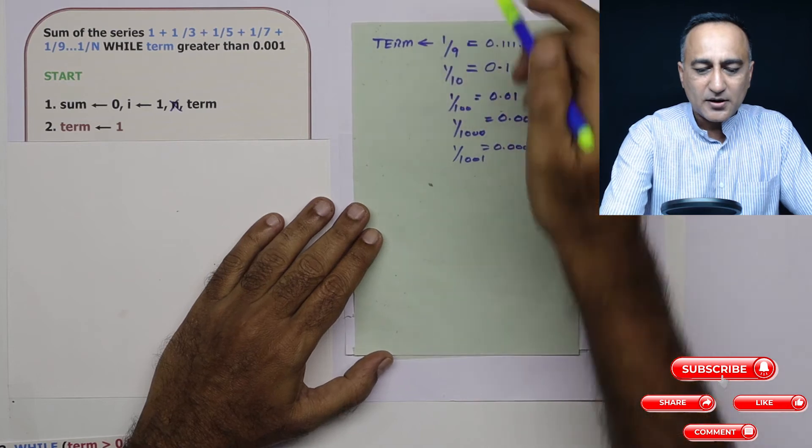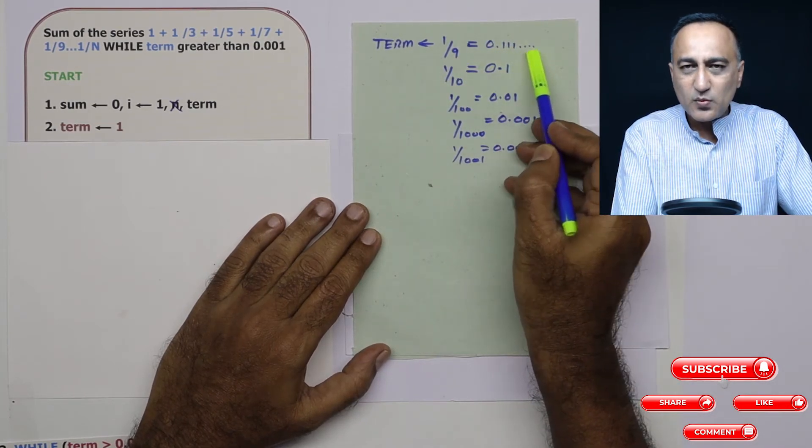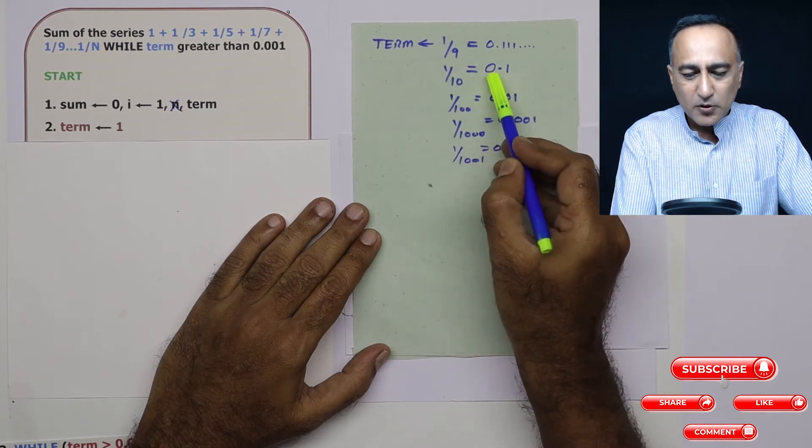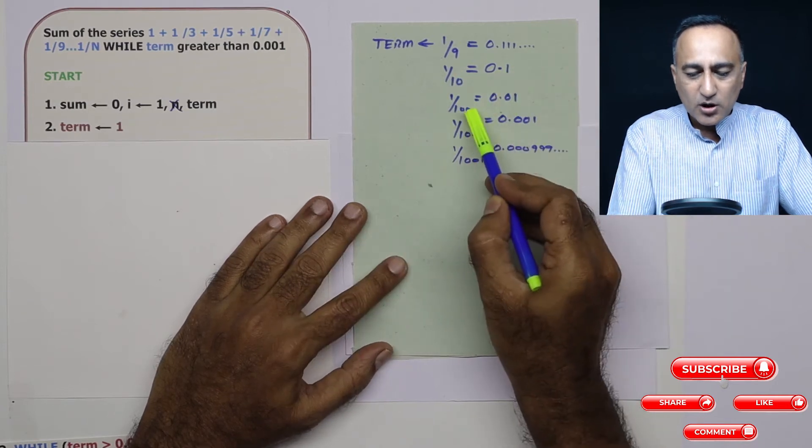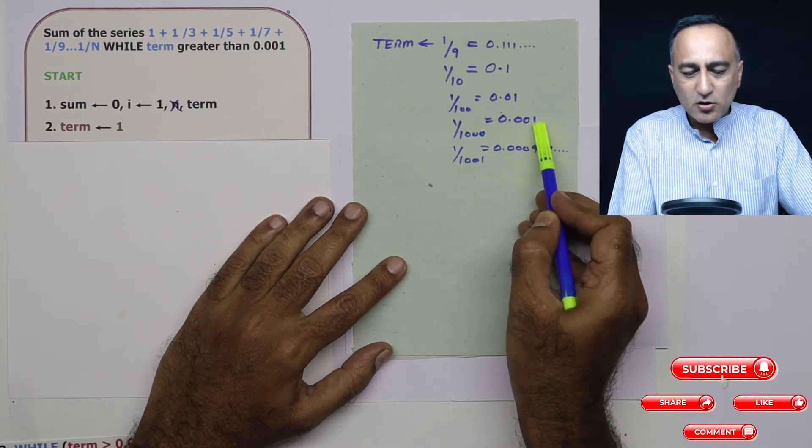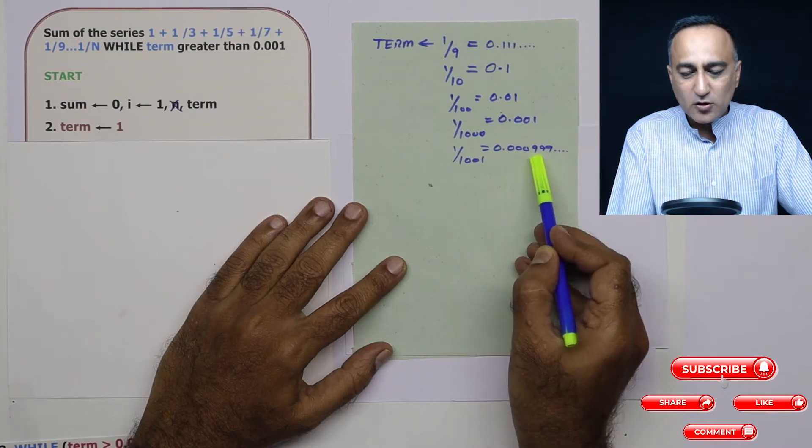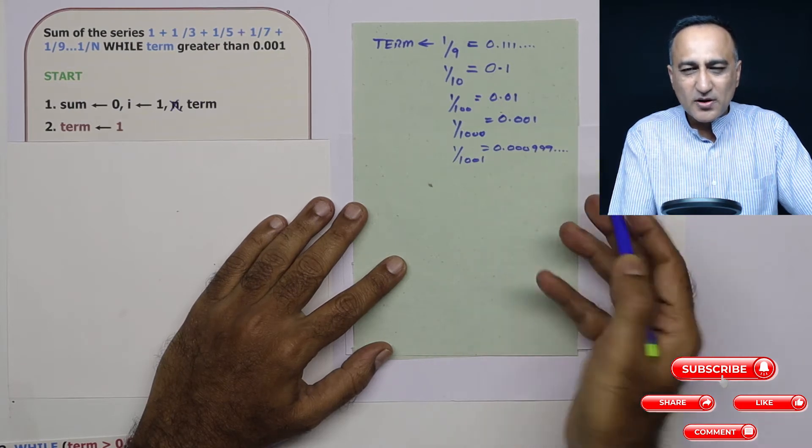Suppose the term happens to be 1 upon 9, so it is approximately 0.1111 never ending. 1 upon 10 is 0.1. 1 upon 100 is 0.01. 1 upon 1000 is 0.001. 1 upon 1001 is 0.00099 0099 something.